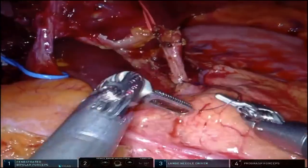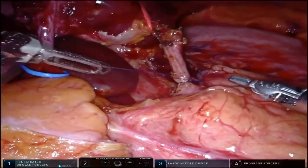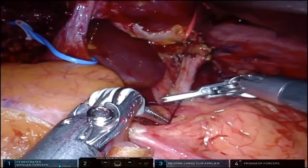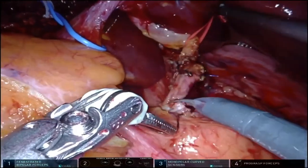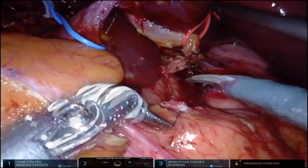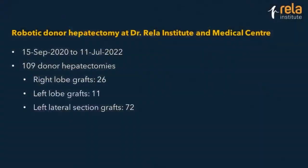The way we approached it was: in the beginning I set a time limit for the first five cases of two hours operating only. In the fifth case I did three hours of operating and then converted. In the one and a half years, we have done 190 — 109 donor hepatectomies. Most of them have been left lateral sections. We have done 11 left lobes and 26 right lobe grafts.